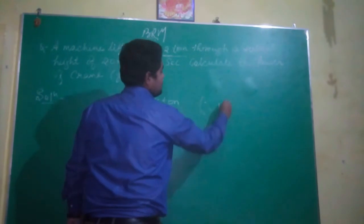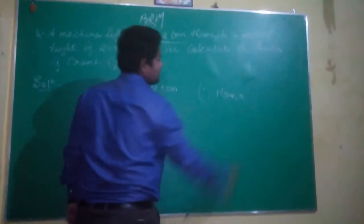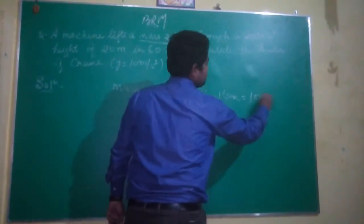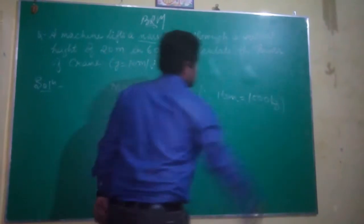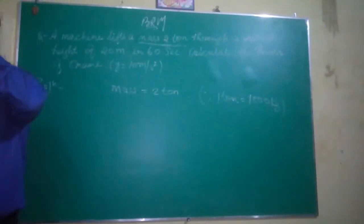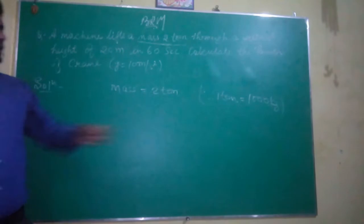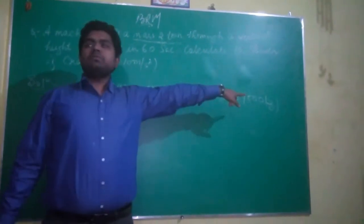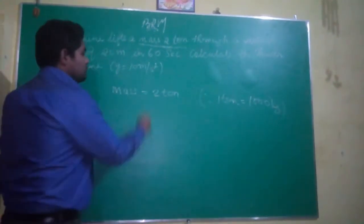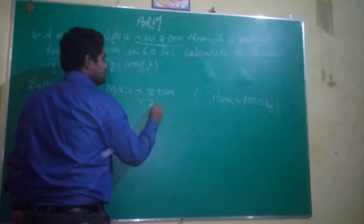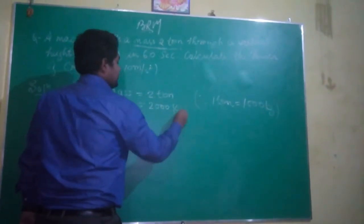We know that 1 ton is equal to 1000 kg. 1 ton is the unit of mass. So 1 ton equals 1000 kg, therefore 2 tons will be 2000 kg.